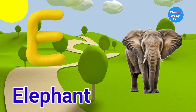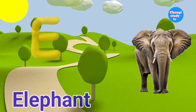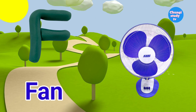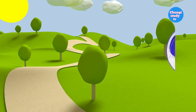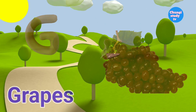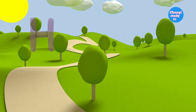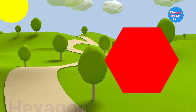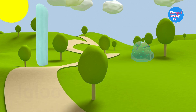E — E for Elephant. F — F for Fan. G — G for Grape. H — H for Hexagon.